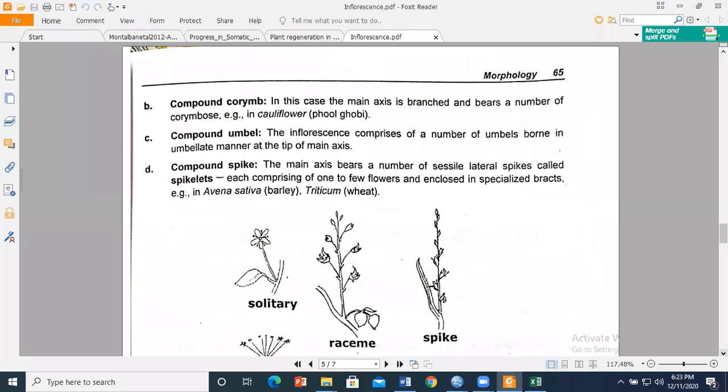This is compound corymb. In compound corymb, the main axis is branched and bears a number of corymbs. For example, in cauliflower, all the flowers are at one level. If you see in cauliflower, all the flower clusters are at one level.